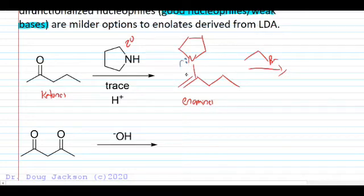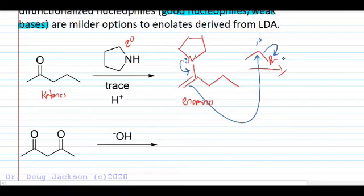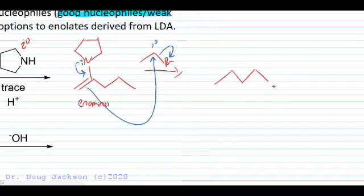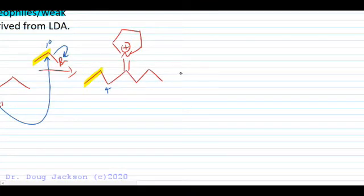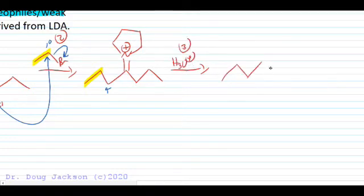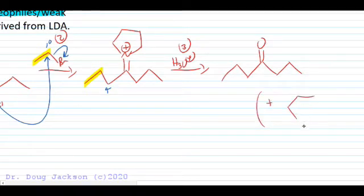The enamine alkylates much like an enolate by reforming the C=N double bond, attacking the primary position of the halide, and kicking off the leaving group. At the end of that step we have a nitrogen-carbon double bond — four bonds to nitrogen gives a plus one formal charge — and we've added carbons from the ethyl group with a new carbon-carbon bond. The third step uses aqueous acid to hydrolyze this iminium back to a ketone, with a byproduct of protonated pyrrolidine, giving our alkylated ketone product.